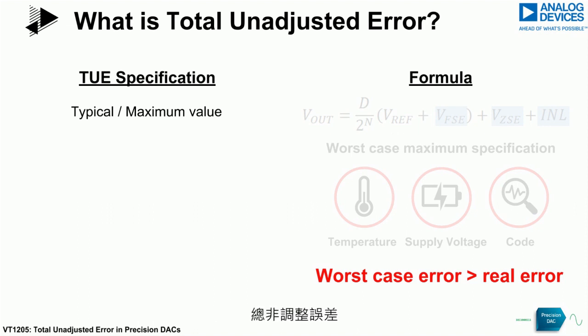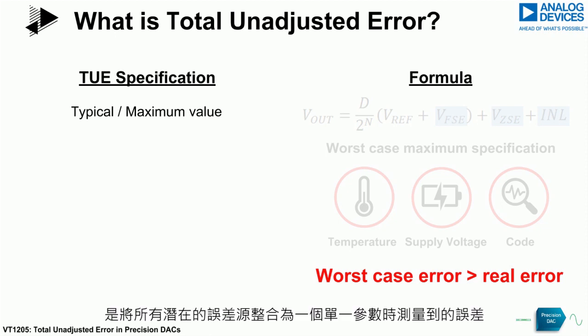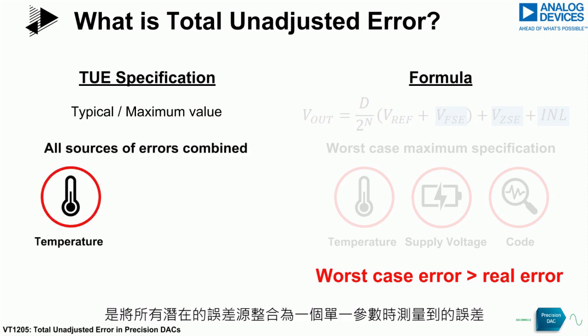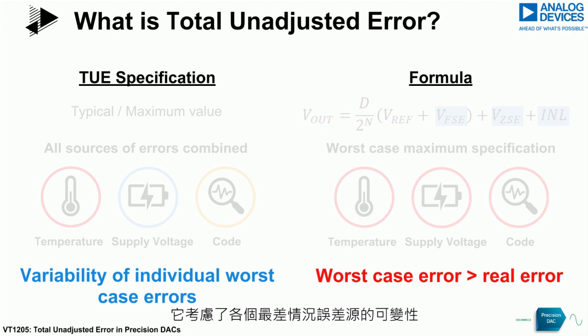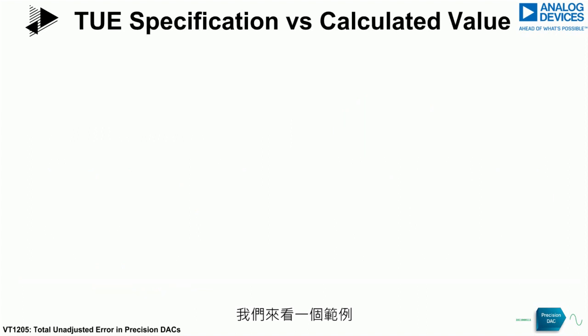Total Unadjusted Error is the error measured when all potential sources of error are combined into a single specification. This takes into account the variability of individual worst-case sources of error. Let us look at an example.